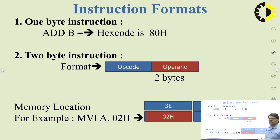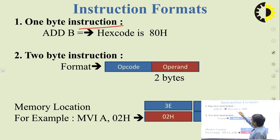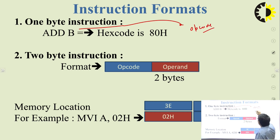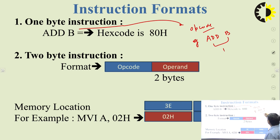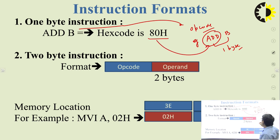Let us see some examples of one-byte instructions. As we studied, the one-byte instruction will always have only the opcode. For example, the instruction ADD B has a size of only one byte. When this opcode ADD is converted into hex, we will have 87H. So 87H is the hexadecimal code corresponding to opcode ADD only.